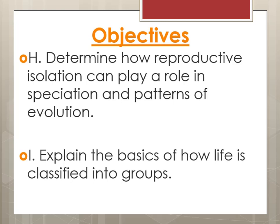We are now on to the last video for chapter 15. Objective I that's on here, we're actually not going to cover — that's the first section of chapter 17. Typically we throw it in, but I'm going to leave it off this time, so don't worry about writing this objective down. We're just going to do H: how reproductive isolation can play a role in speciation, and we'll look at some patterns in evolution.